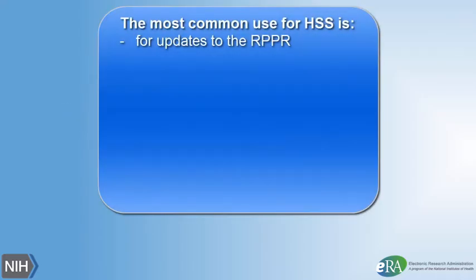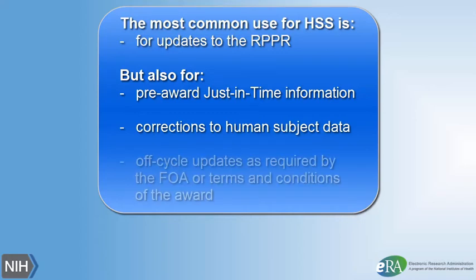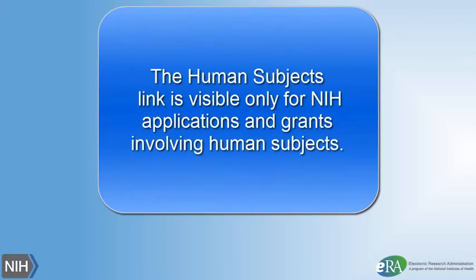Note that the most common use of the Human Subjects System is for updates needed to the RPPR. Other uses are pre-award for just-in-time information or correction of human subject data, or for off-cycle updates as required in the Funding Opportunity Announcement or Terms and Conditions of Award. The Human Subjects link is visible only for NIH applications and grants involving human subjects.